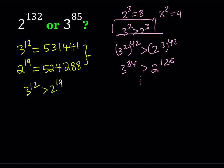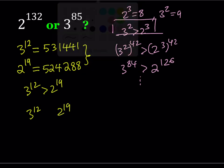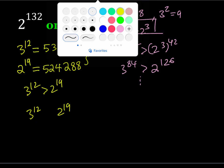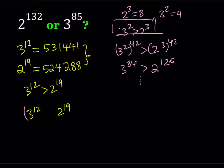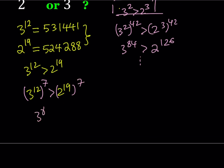Now how is that going to help us? Well, from the 12th power, I want to go to something like 85. So how about raising both sides to the 7th power? So let's go out and do that. 3 to the power 12 and 2 to the power 19. And I'm going to be raising both sides to the power 7. And of course the inequality is going to be preserved.